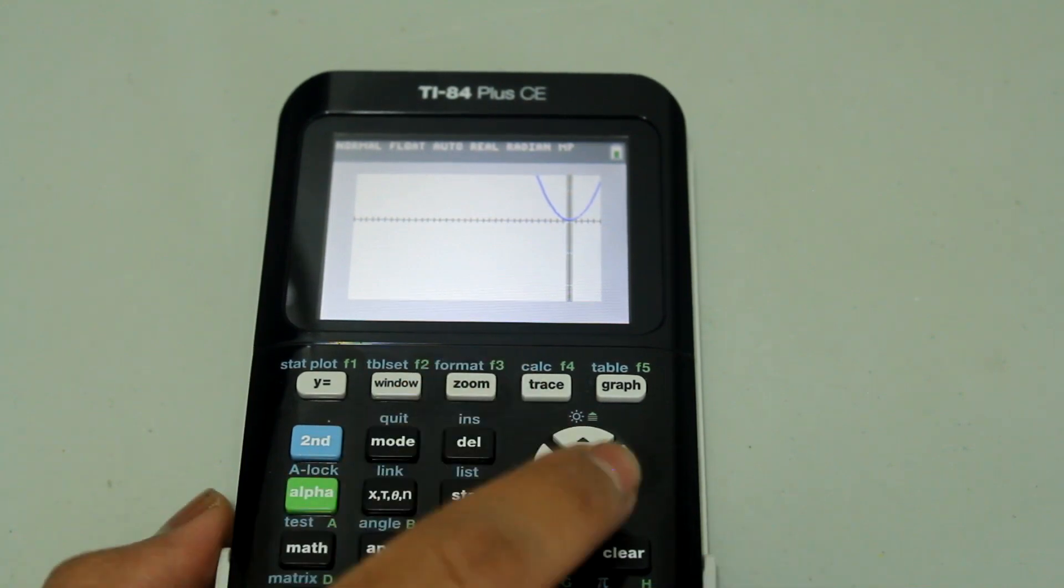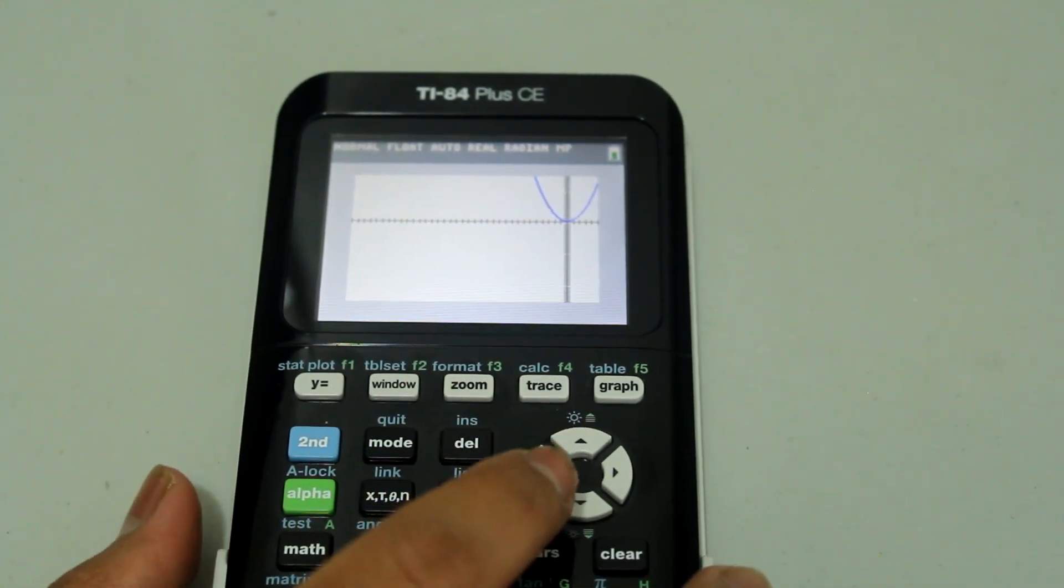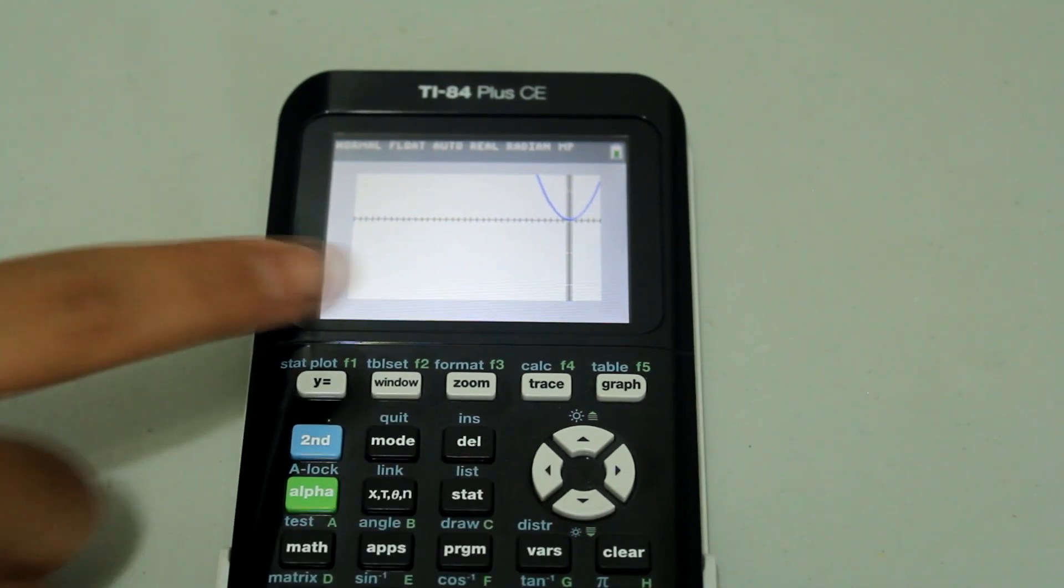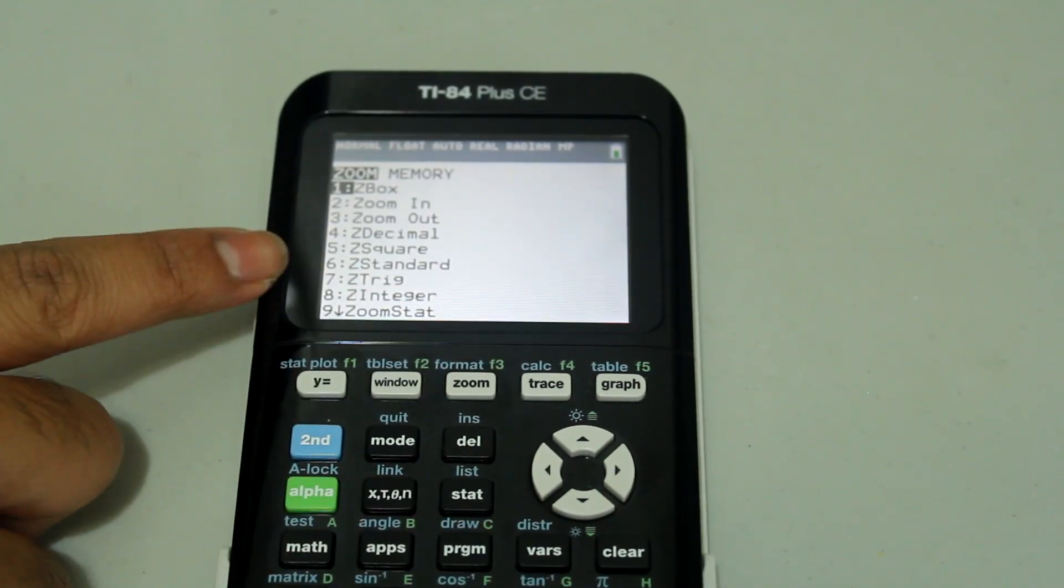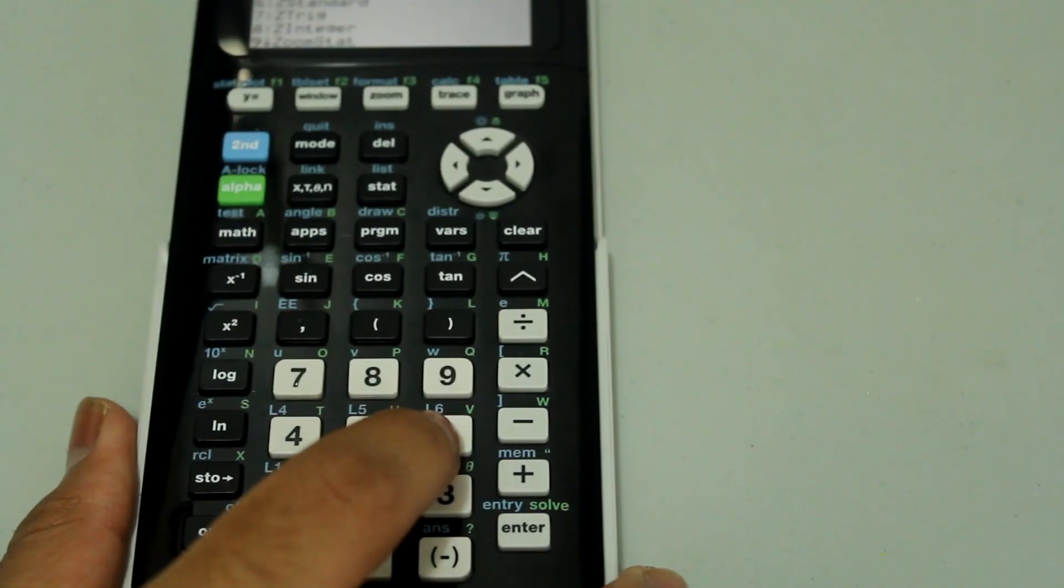Let's just change this to the standard graphing window for now and then recall the saved graphing window. So press zoom, and press number 6 which is Z standard. Press 6 on the number pad.